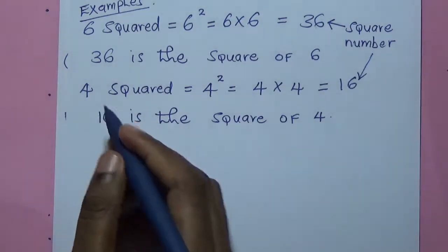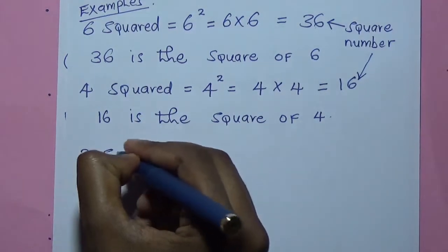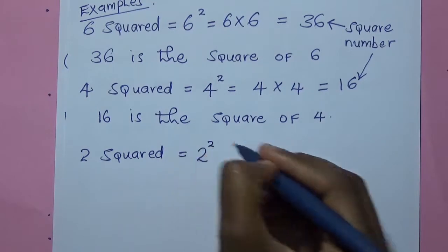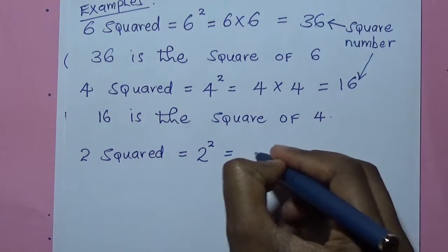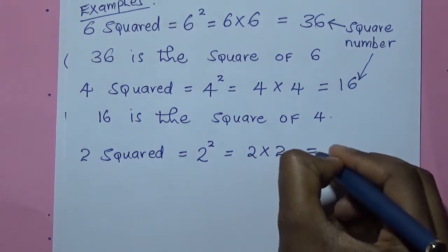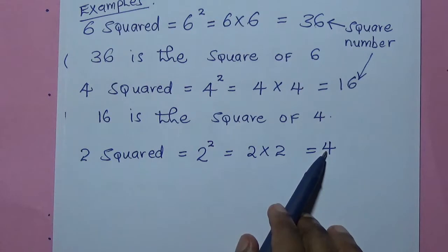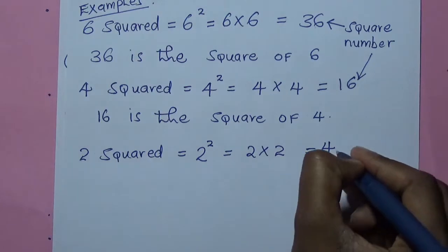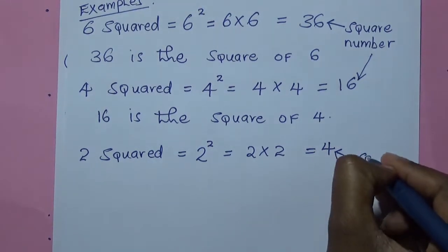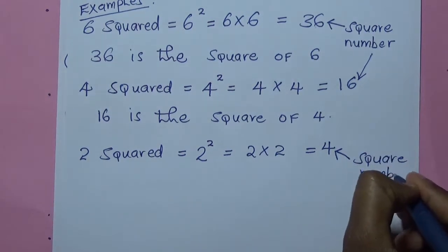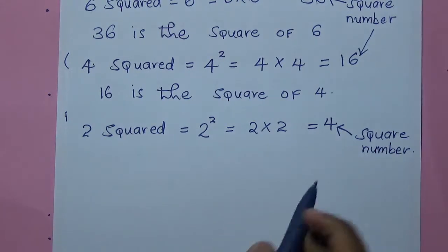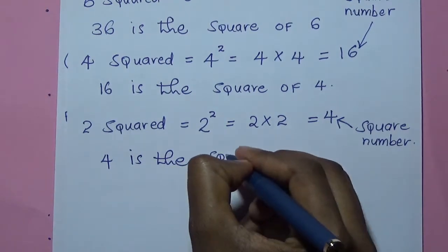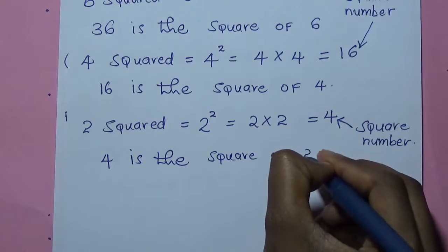The same case applies for 2. 2 squared can be written as 2 with a small 2 on top, which means you multiply 2 times 2 to give you 4. So 4 is formed when you multiply 2 by itself, and this is the square number. Therefore, 4 is the square of 2.